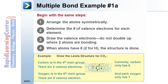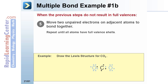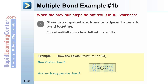Currently, the carbon only has six electrons and each oxygen atom only has seven. When the previous steps do not result in atoms having full valence shells, move electrons that are single on adjacent atoms in to form a double bond. The atoms must be adjacent to form a double bond. Now the carbon atom has eight valence electrons, as do each of the oxygen atoms.